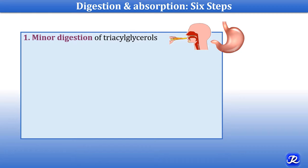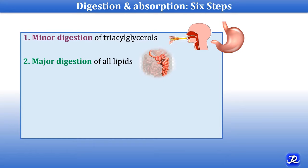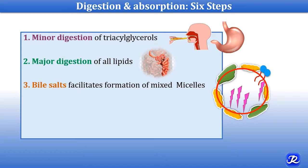Second, major digestion of all lipids in the lumen of the duodenum or jejunum by pancreatic lipolytic enzymes. Third, bile acid facilitates formation of mixed micelles, which has a role in absorption.